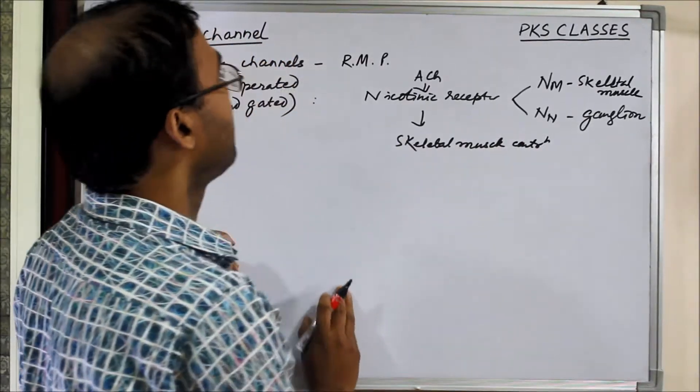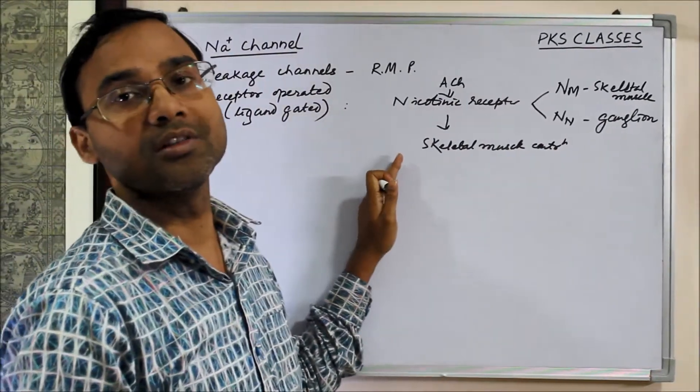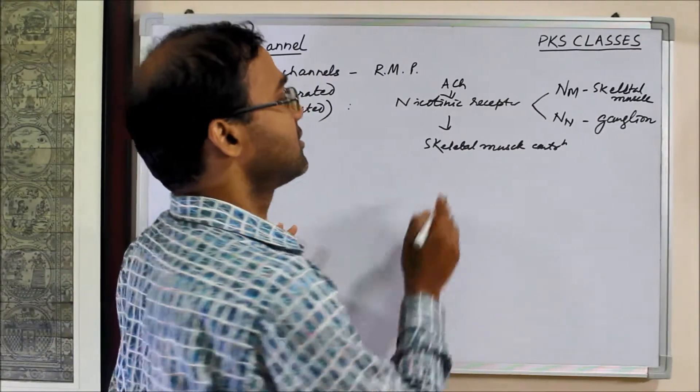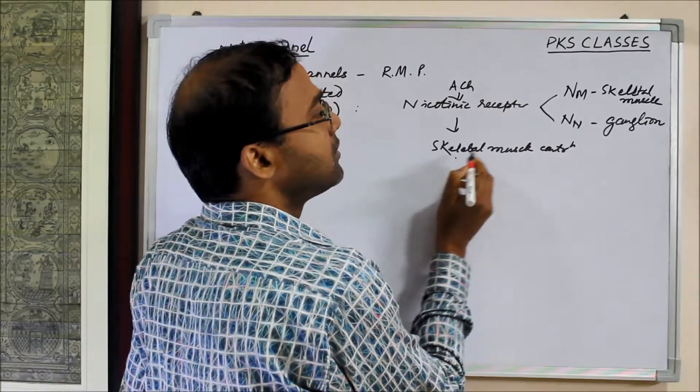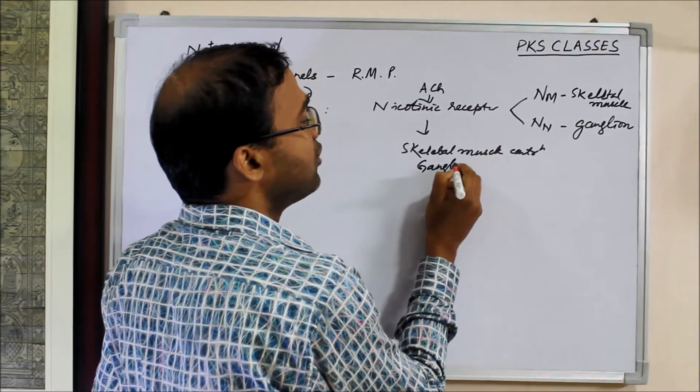Acetylcholine acting on the nicotinic receptor causes, if NM, then skeletal muscle contraction. A blocker will cause skeletal muscle relaxation and if it is ganglion then ganglion stimulant.